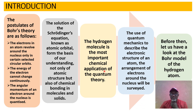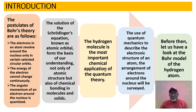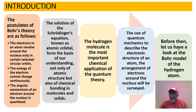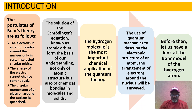This is because hydrogen has only one proton and one electron and is very easy to model. We will see what happens when we come to many-electron systems, but for hydrogen we have only one electron and one proton. And if we look at the hydrogen molecule — two hydrogen atoms coming together — the electrons are still in the 1s orbital, so it's easy to model. The use of quantum mechanics to describe the electronic structure of an atom and the arrangement of electrons around the nucleus will be surveyed. But before then, let us have a look at the Bohr model of the hydrogen atom before we go into the Schrödinger equation, atomic orbitals, and so on.